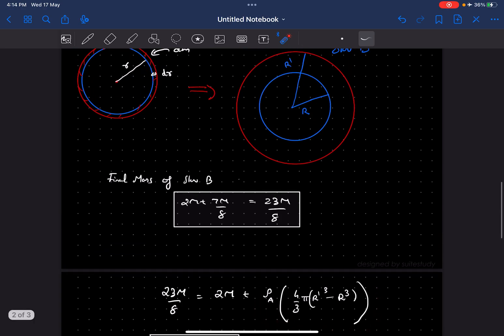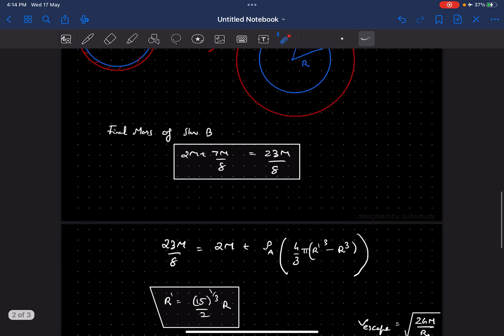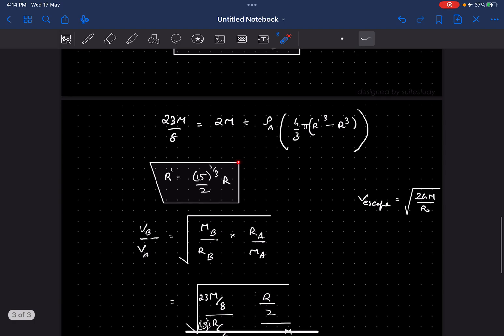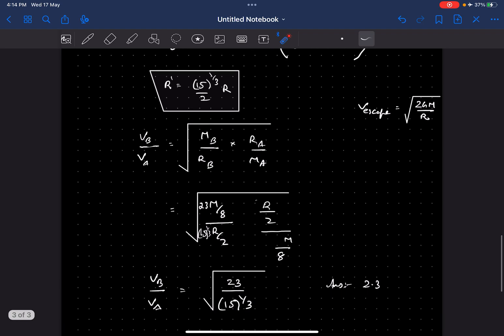Which is the mass of this red region, because it's given that the density of this part is still rho A, and the volume is simply 4 by 3 pi r dash cube minus r cube. Now once you solve this, you'll get the final radius of planet B, and once you have that,